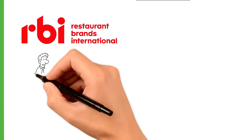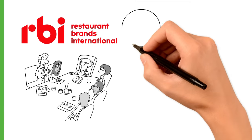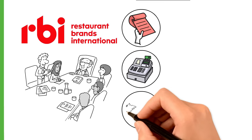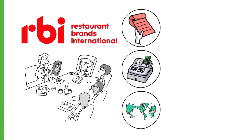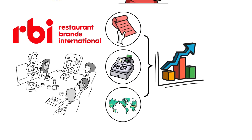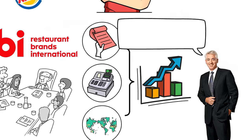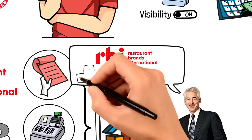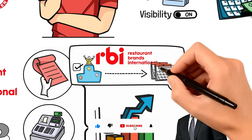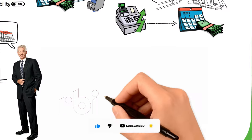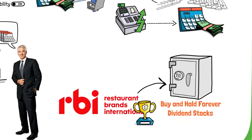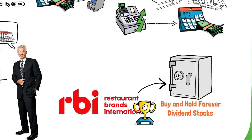But QSR isn't resting on its accomplishments. They're constantly innovating, whether that's through menu updates, digital ordering enhancements, or expanding their global footprint. For us as investors, this means there's potential for growth on top of the already solid foundation. And when Bill Ackman looks at QSR, he sees a company that's not just leading the pack today, but is well positioned to stay at the front for years to come. It's this blend of current strength and potential future that makes Restaurant Brands International a top pick in Ackman's playbook for those coveted buy-and-hold-forever dividend stocks.